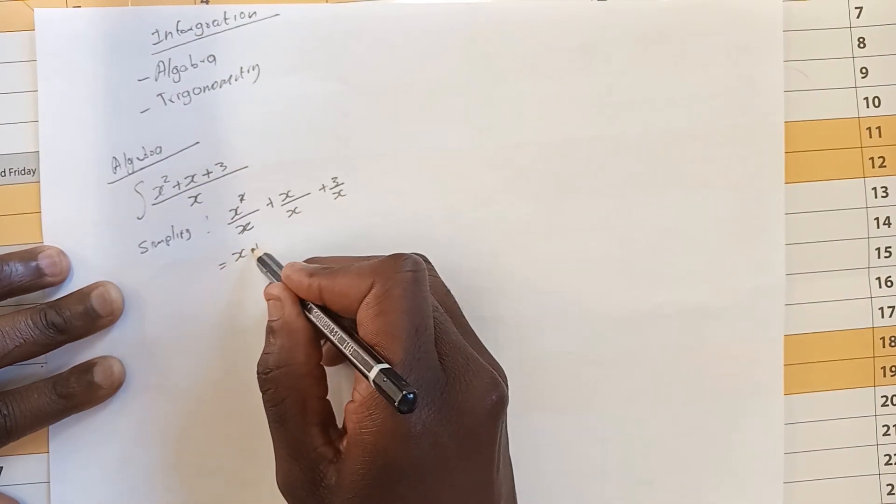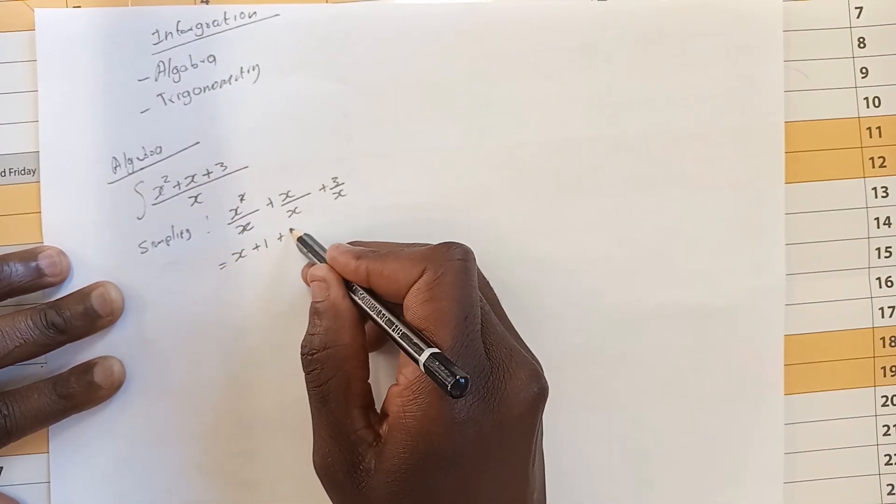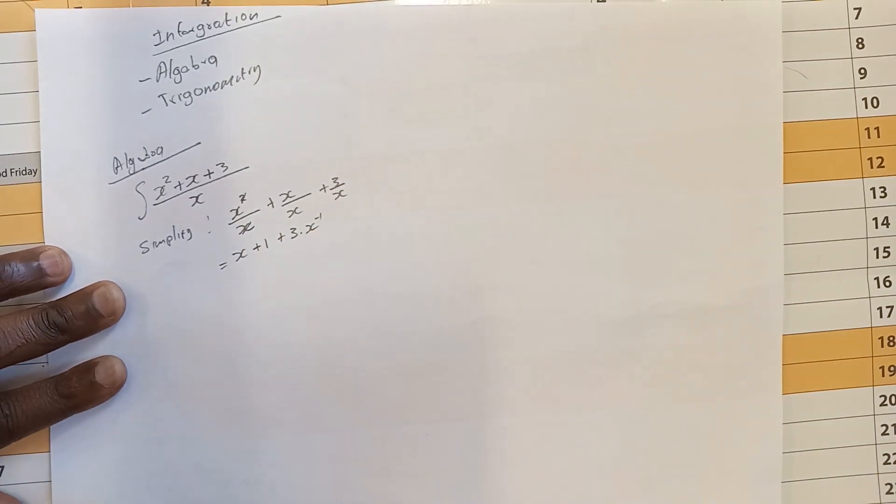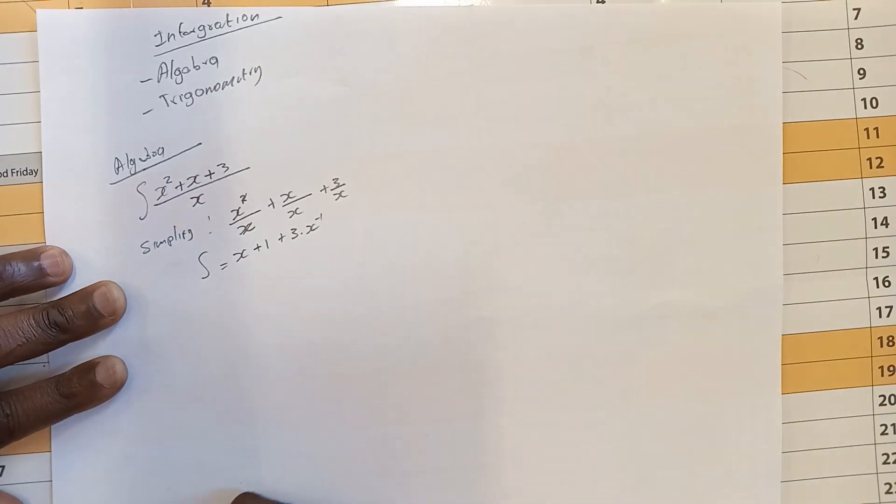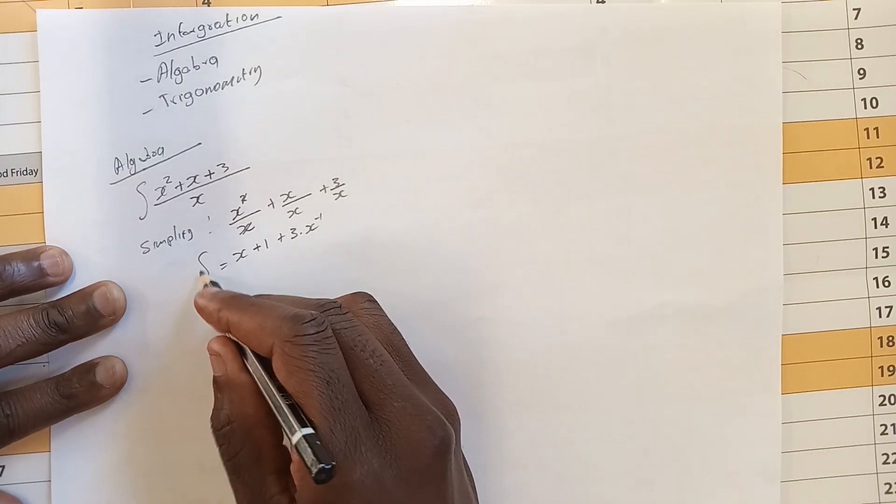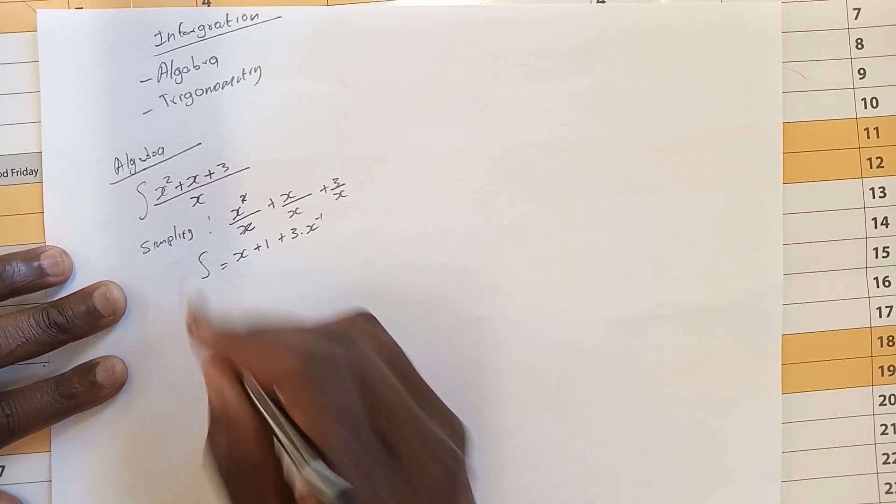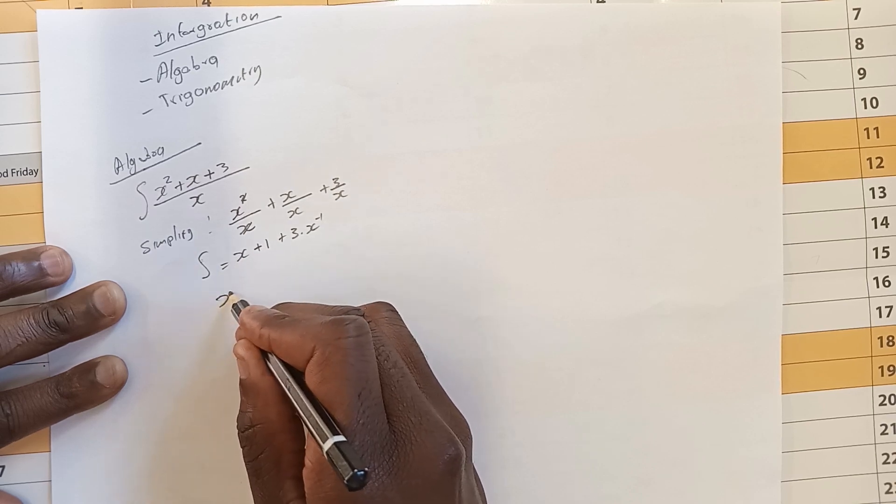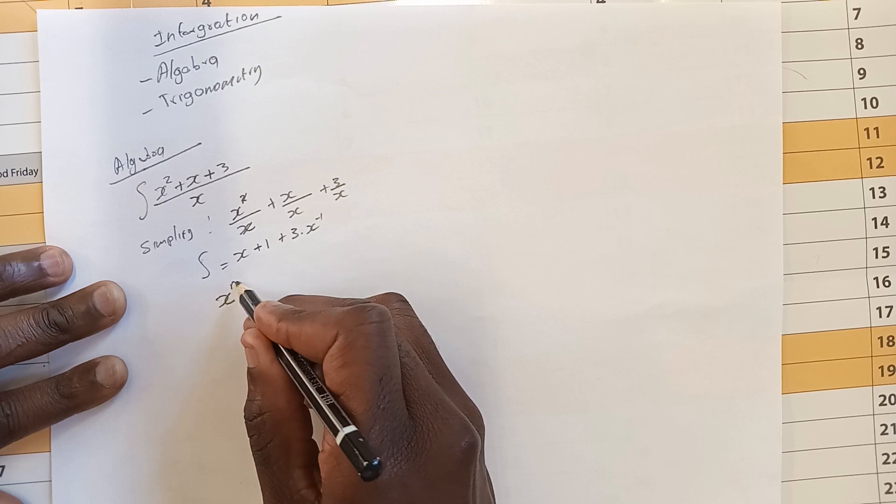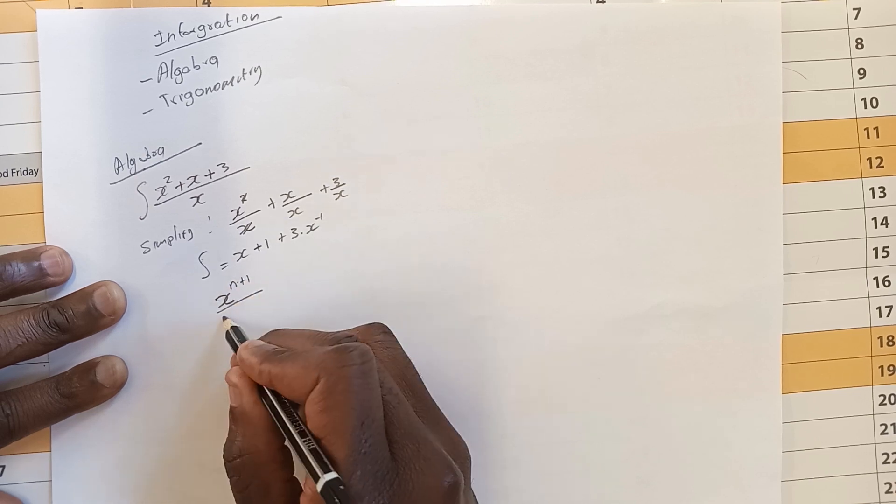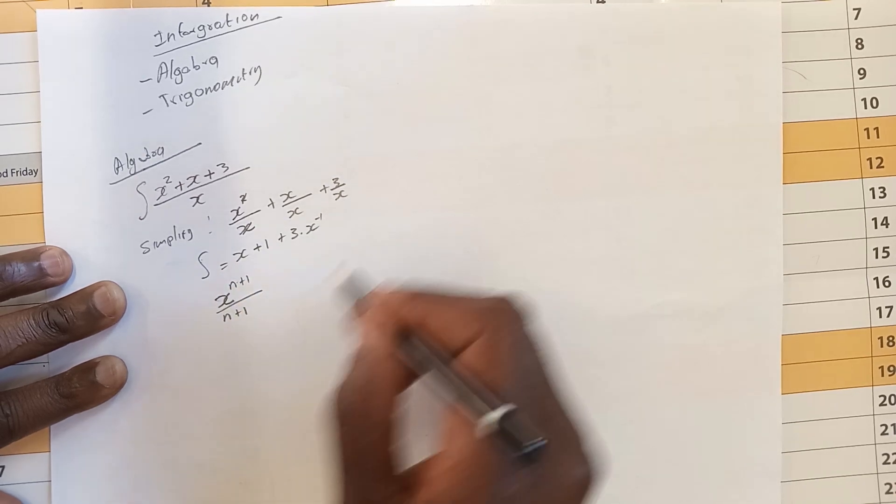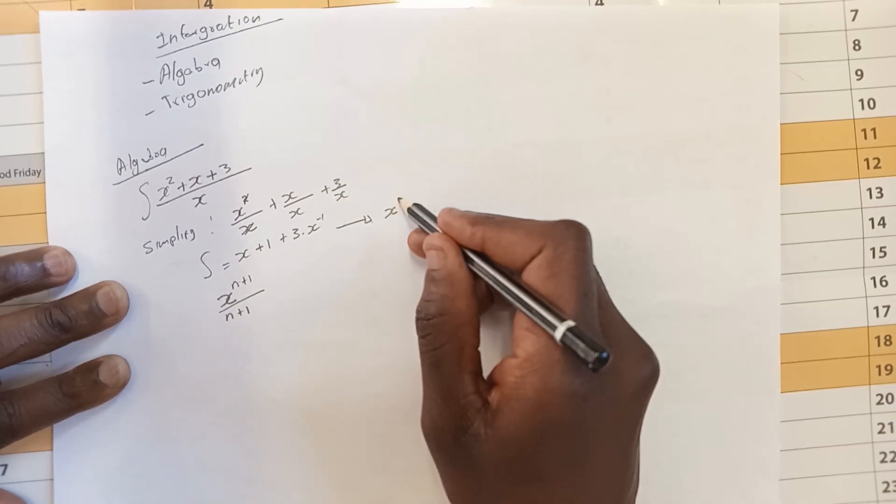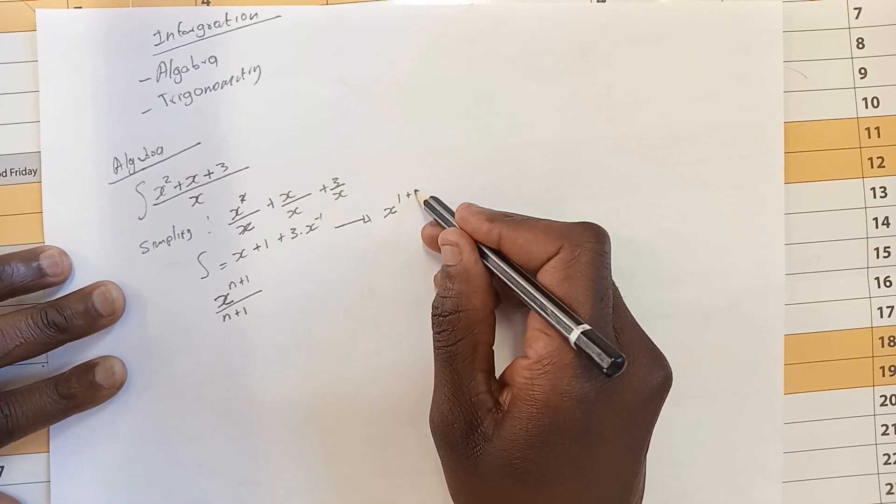So we integrate. When we start integrating our symbol is our integral sign. When we integrate we say is x for example n plus 1 divided by n plus 1.